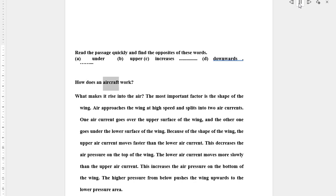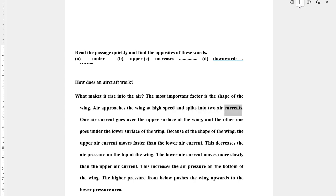How does an aircraft work? What makes it rise into the air? The most important factor is the shape of the wing. Air approaches the wing at high speed and splits into two air currents. One air current goes over the upper surface of the wing and the other one goes under the lower surface of the wing.